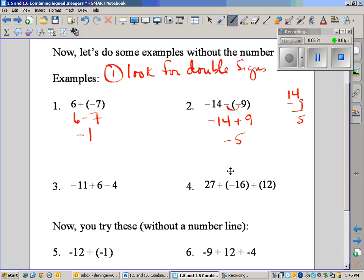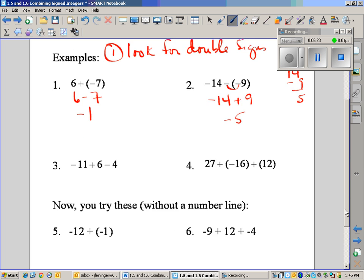If we look at one that's got three numbers, like example number three, we don't have any double signs. That's good. So we can just start hopping in our mind on the number line. I'm at negative 11. I come back six. I'm now at negative five. Now I'm at negative five on the number line, and I want to go left getting more negative on the number line, and I'm at negative nine.